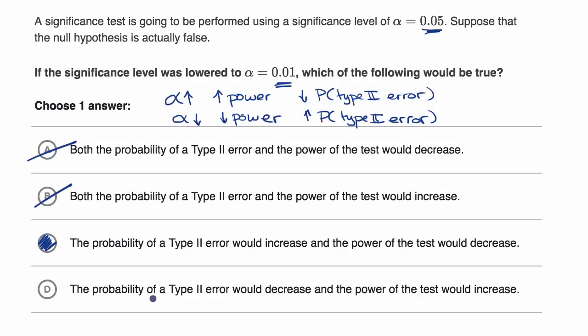And choice D is the opposite of that. The probability of a type two error would decrease. They're talking about this scenario over here and that would have happened if they increased our significance level, not decreased it. So we could rule that one out as well. Let's do another example.